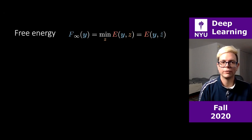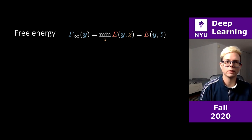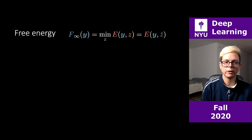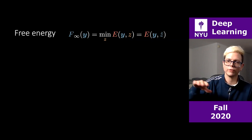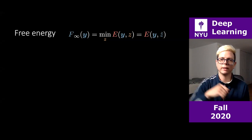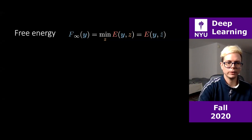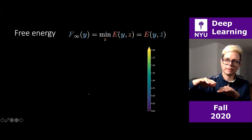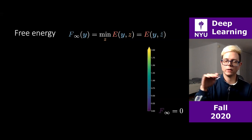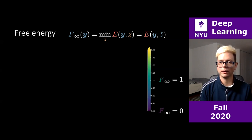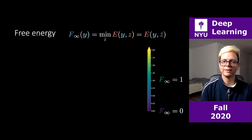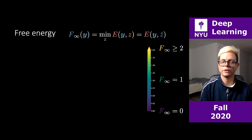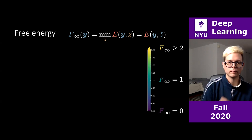We had computed f-infinity, called the zero temperature limit free energy, as a function of y, where y is a two-dimensional vector. When plotting f-infinity of y, it's a scalar field — a height over a 2D region. Purple represents height equal to zero, green represents equal to one, and yellow represents everything above and beyond free energy equal to one.